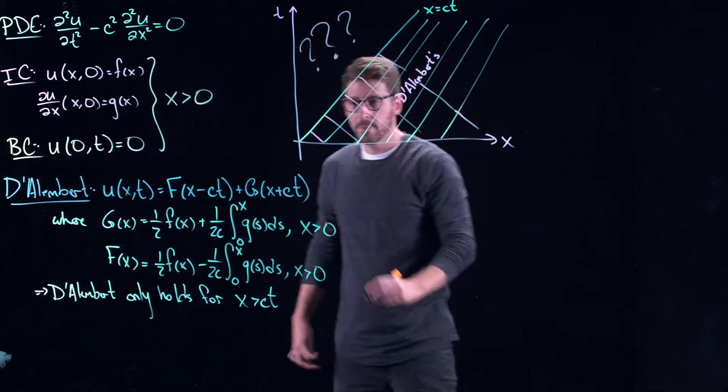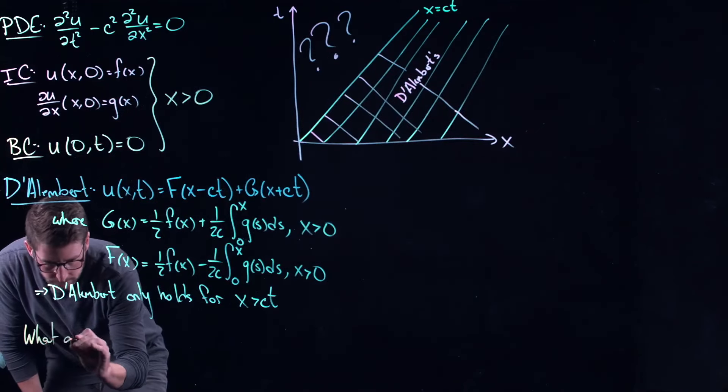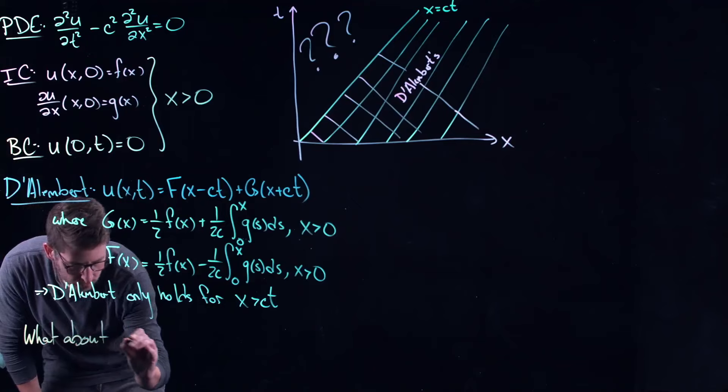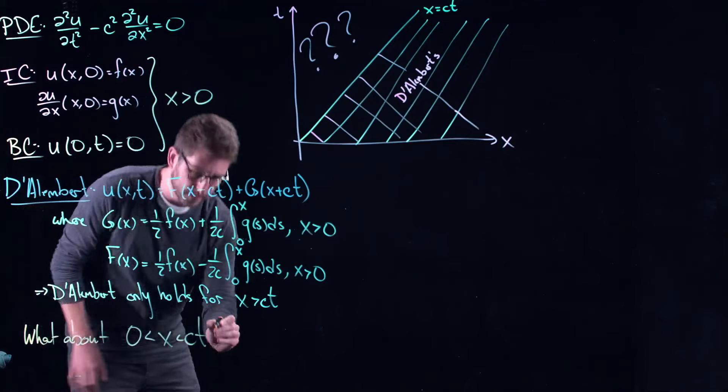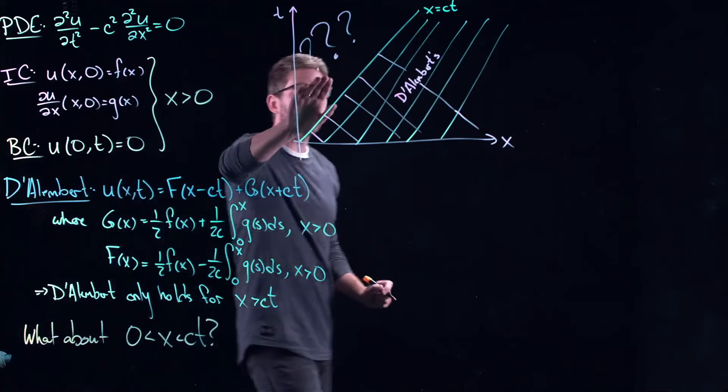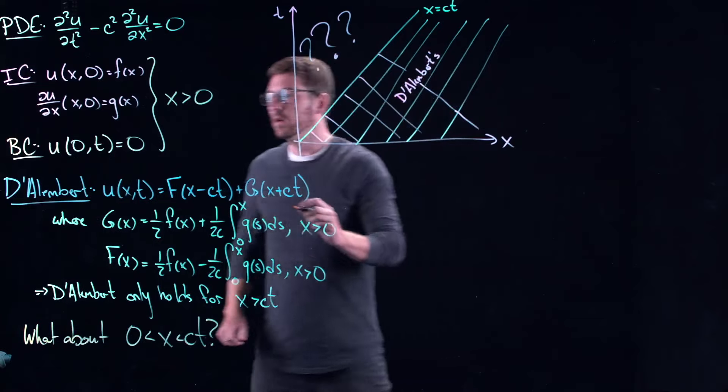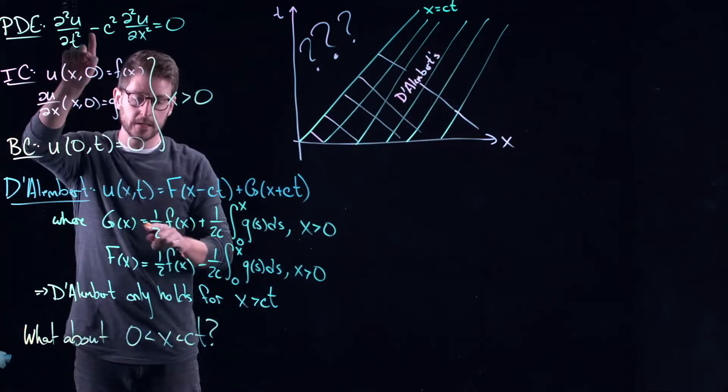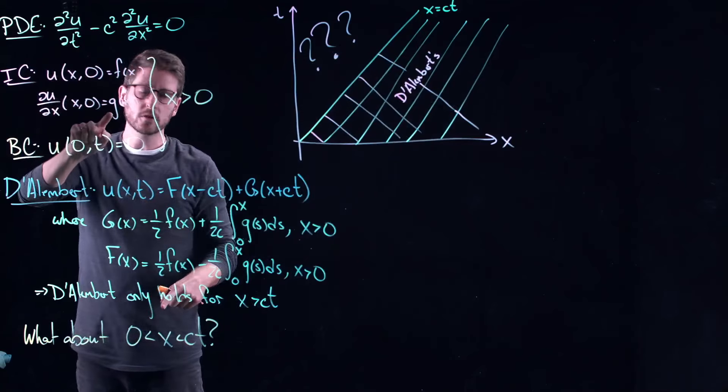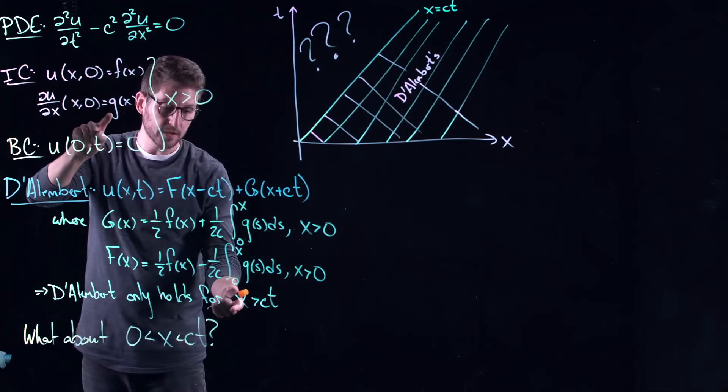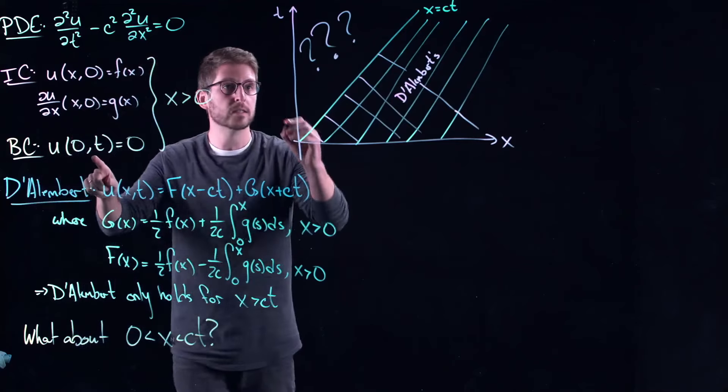Well, so let's actually pose this as a question. What about 0 which is less than x which is less than ct, right? So what does this solution look like up in this region? Up here? Well, we've used the PDE to get D'Alembert's solution. We used the initial conditions to get the specific solution for D'Alembert. But the only thing we haven't used yet is the boundary condition.